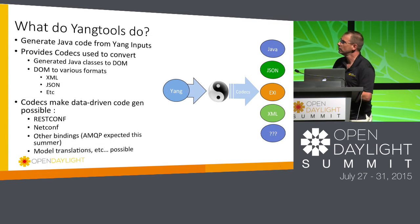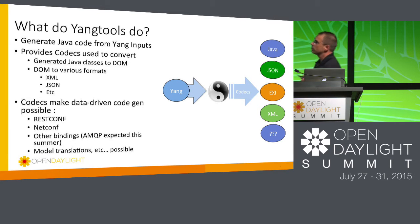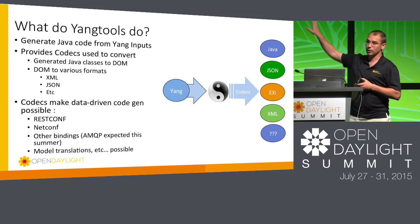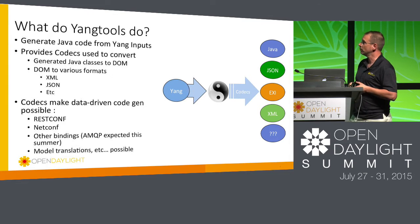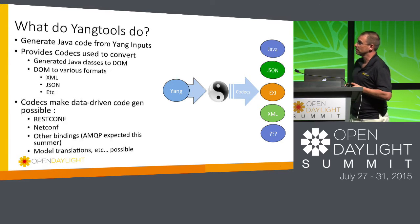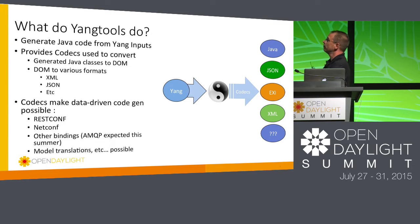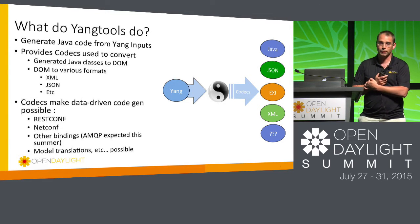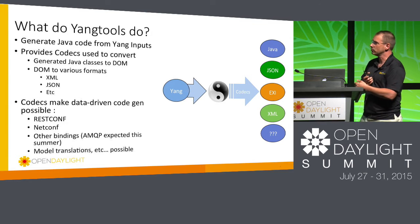What do Yang tools do? Conceptually, Yang tools in ODL generate Java code from Yang inputs, although Yang tools themselves are effectively a compiler that takes Yang as an input and generates various outputs using what we're calling codecs. In the case of Java, generated classes are mapped to the DOM, and we can output various formats mapped to that.